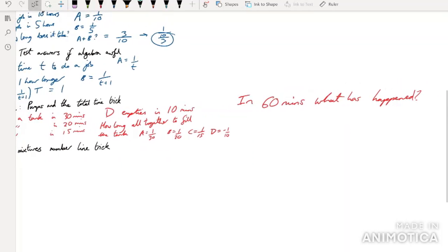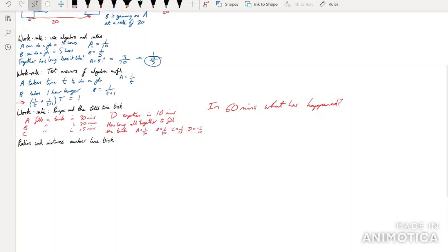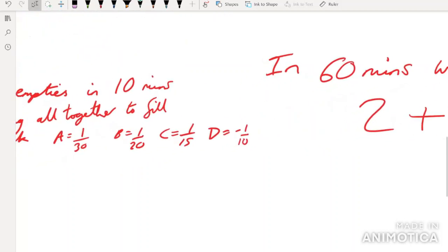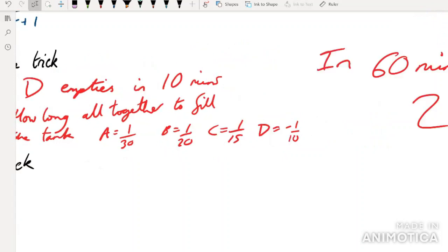What I mean by that is, how many times has A filled the tank? Well, A has filled the tank twice. How many times has B filled the tank? Three times. How many times has C filled the tank? Four times. How many times has D emptied the tank? Six times. And so, in 60 minutes, we've got five, nine, three. And so, in 60 minutes, we've got three full tanks. So obviously, to get one full tank, it's 20 minutes. So you can see nice time-saving methods that avoid all this horrible algebra are sometimes applicable.